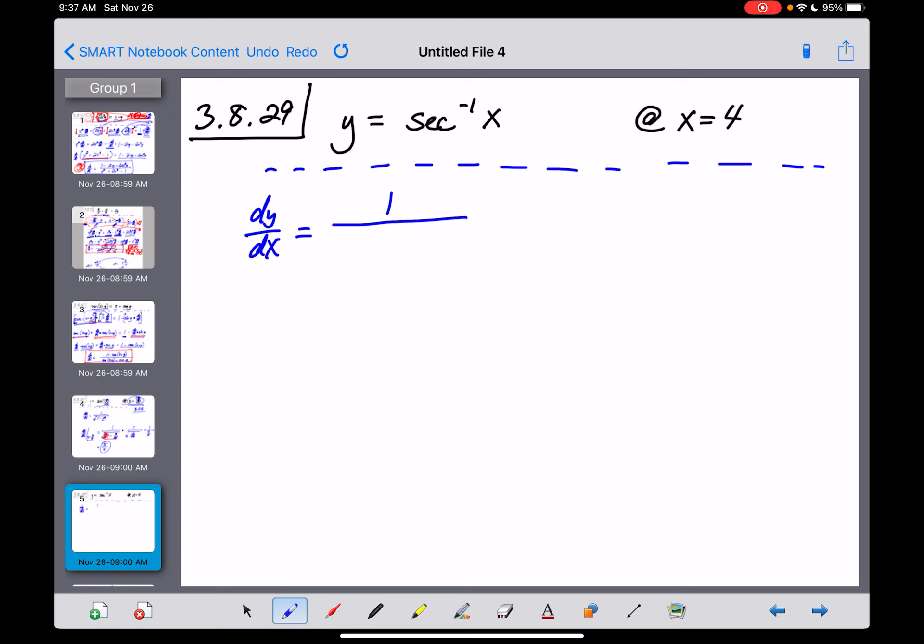This is going to be 1 over, and now this is where they start to get a little bit tricky. It's the absolute value of u, whatever this ratio is, so it's the absolute value of x, and then multiplied by the square root of u squared minus 1. So that's x squared minus 1 in this case.